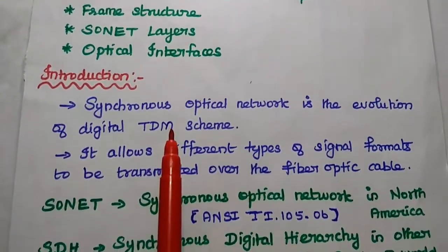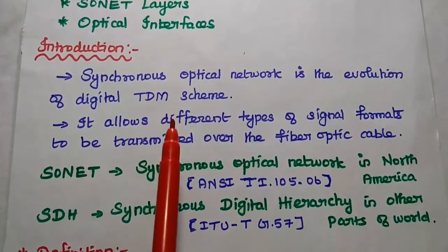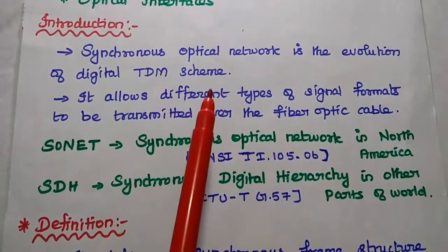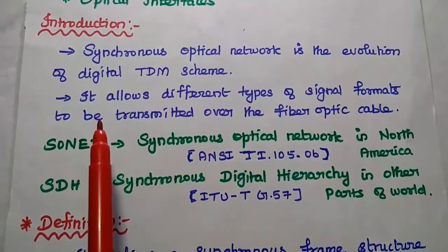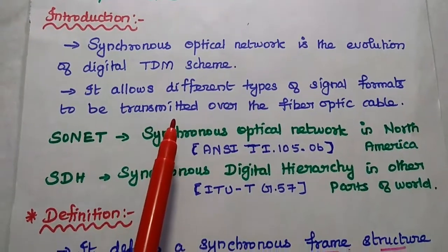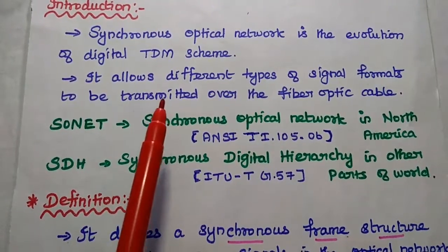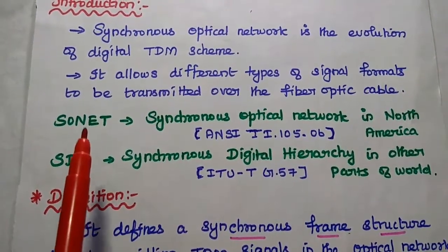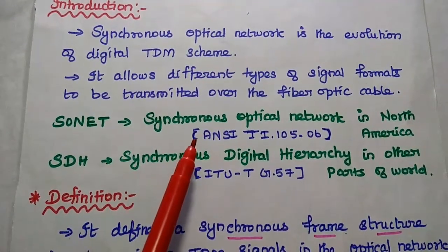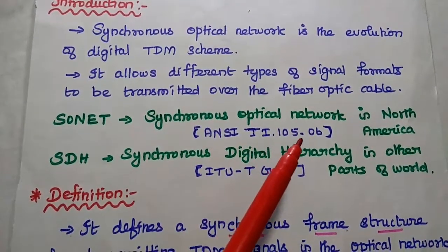The Synchronous Optical Network is the evolution of digital time division multiplexing scheme with the advancement in the fiber optic transmission link. It allows different types of signals to be transmitted over the fiber optic cable synchronously. SONET is the acronym for Synchronous Optical Network in North America, and it was developed by ANSI T1-105.06.